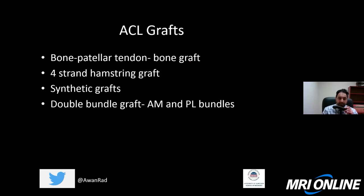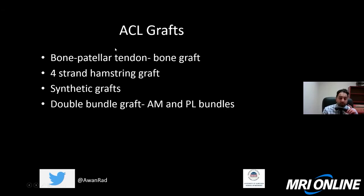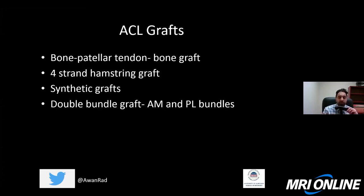There are many types of grafts, and they continue to evolve with time. We're going to talk about two grafts today: the bone patellar tendon bone graft and the four-strand hamstring graft done with the semitendinosus and gracilis tendons. These make up the vast majority of grafts we see in practice today. These two are autologous grafts. There are also cadaveric grafts and donor grafts from other individuals, but we'll focus on autologous bone patellar tendon bone grafts and four-strand hamstring grafts.